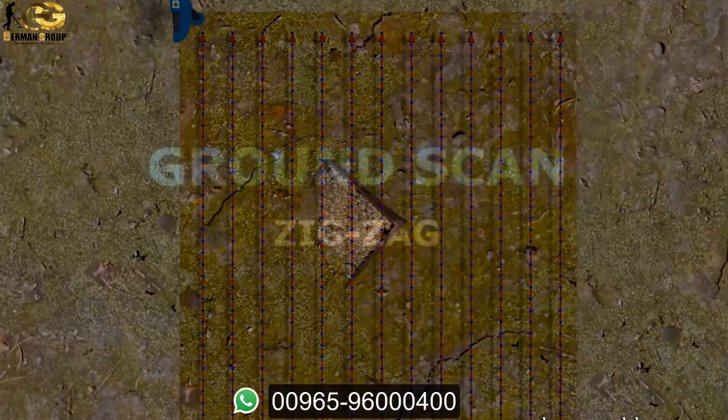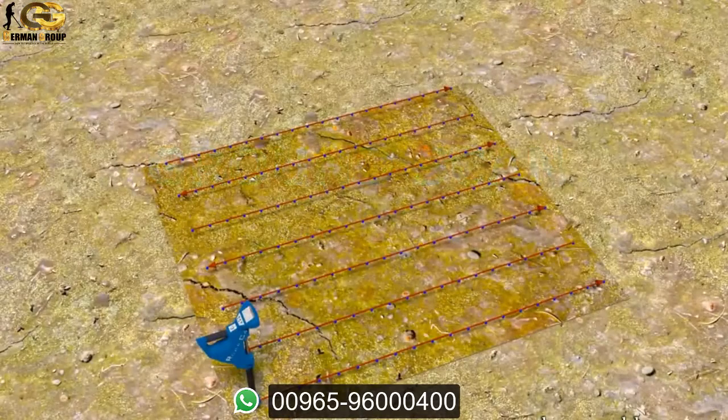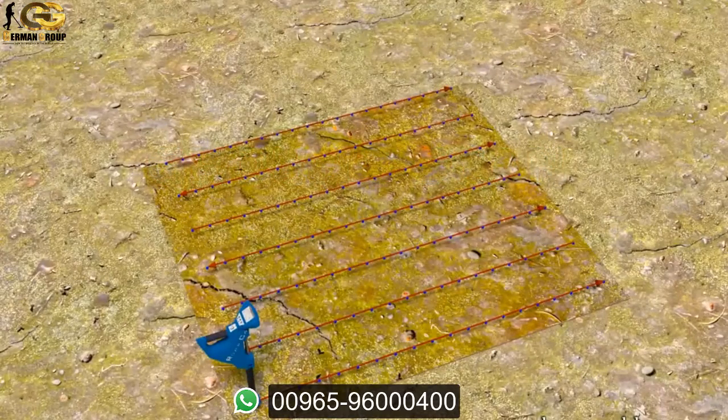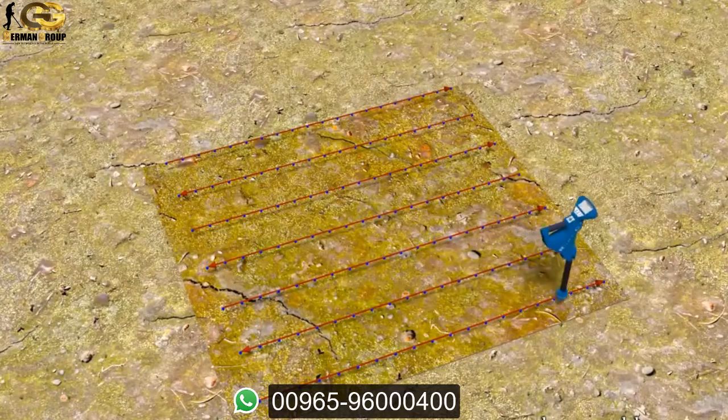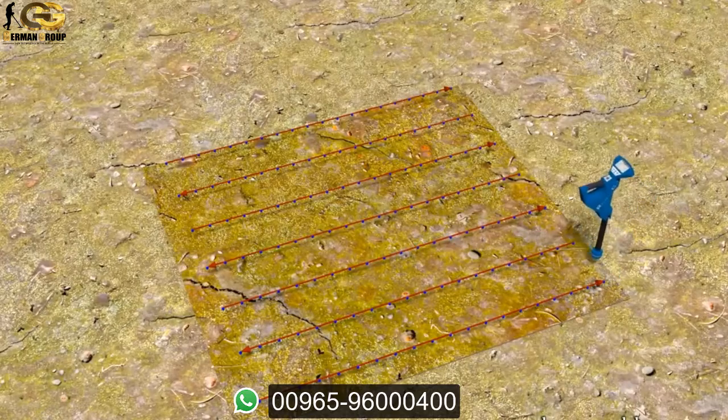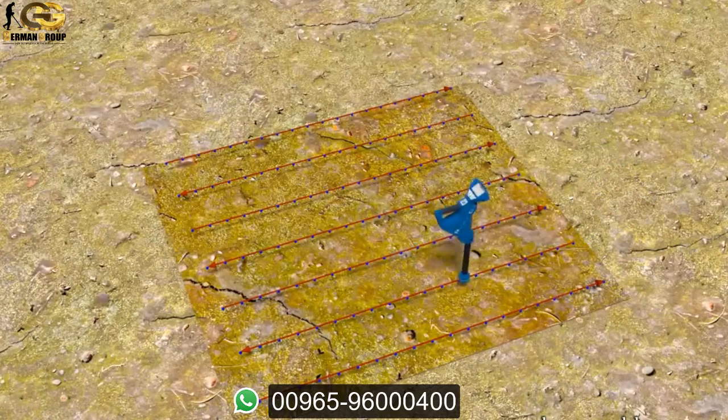Next to the parallel mode there is zigzag where you scan forth and back. We are also starting on the corner and scan the first path. Now we step to the left and scan the second path backwards.